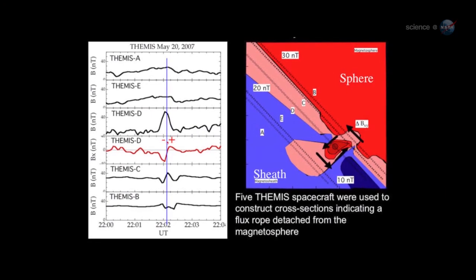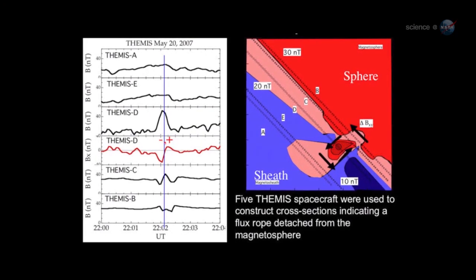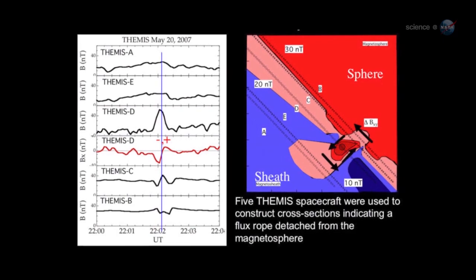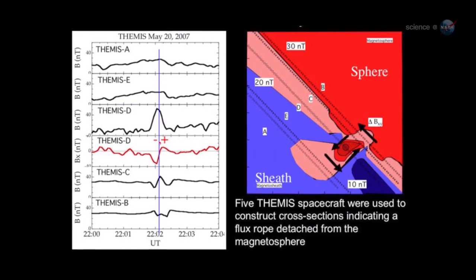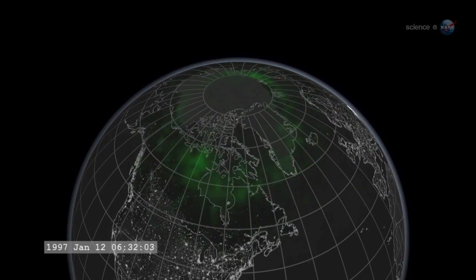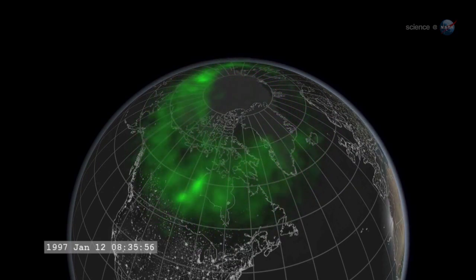Most portals are small and short-lived. Others are yawning, vast, and sustained. Energetic particles can flow through the openings, heating Earth's upper atmosphere, sparking geomagnetic storms, and igniting bright polar auroras.